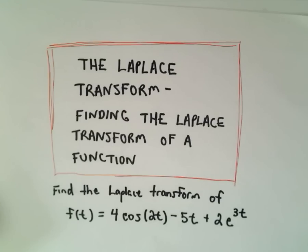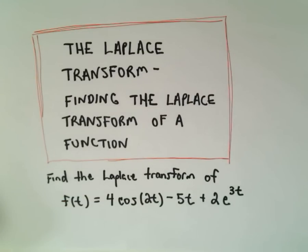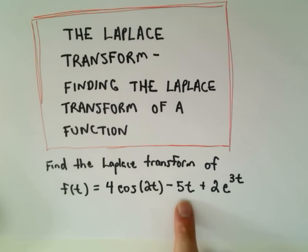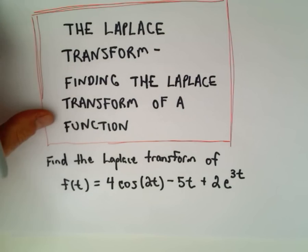Alright, in this video I want to find the Laplace transform of a function. Here we're going to find the Laplace transform of 4 times cosine of 2t minus 5t plus 2 times e to the 3t.